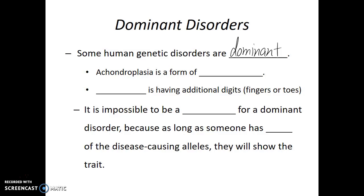Achondroplasia is an example of a dominant disorder — it is a form of dwarfism. Polydactylism, which is having extra fingers or toes on your hands and feet, is another example of a dominant genetic disorder. Both of these disorders are caused by a dominant allele, yet they tend to be very rare in the general population. So again, just because an allele is dominant doesn't mean that it's common.